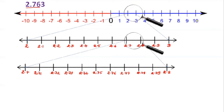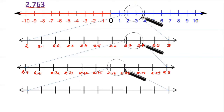Now take the next digit. 2.763 lies between 2.76 and 2.77. Imagine that you are having a magnifying glass. If you divide into 10 equal parts, it looks like this — 2.76 and 2.77 are the endpoints. After that: 2.761, 2.762, 2.763, 2.764, 2.765, 2.766.